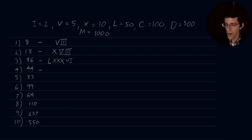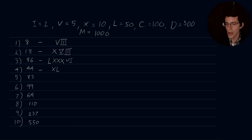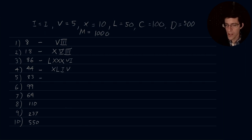For 44: we have 50, which is L, and in order to reduce it by a magnitude of 10, we put an X in front. There's our 40. Then for 4: we have our V, which is 5, and if we put an I in front of it, we reduce it by 1. So 44 is XLIV. For 83: once again we have our L value, and then we follow that by three X's — that's our 80. Then 3 is three I values. So 83 is LXXXIII.